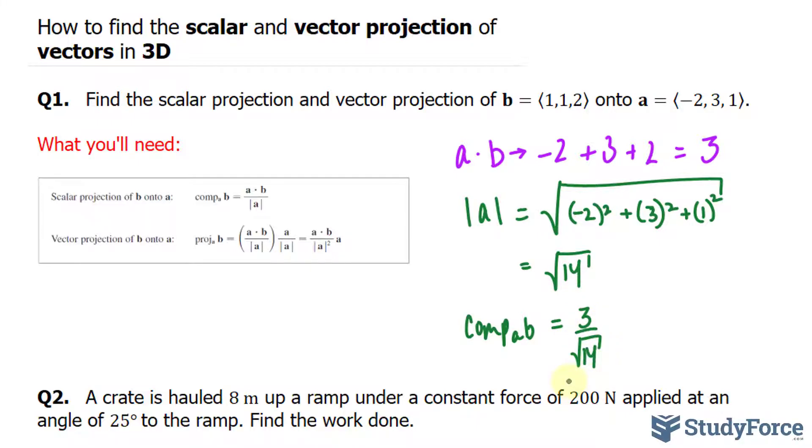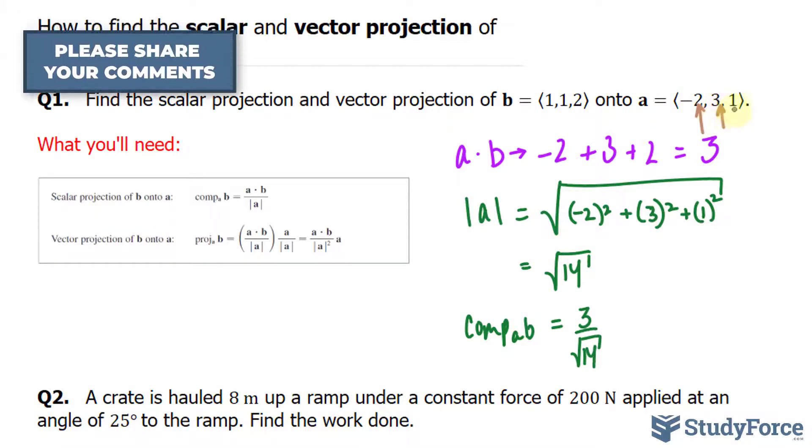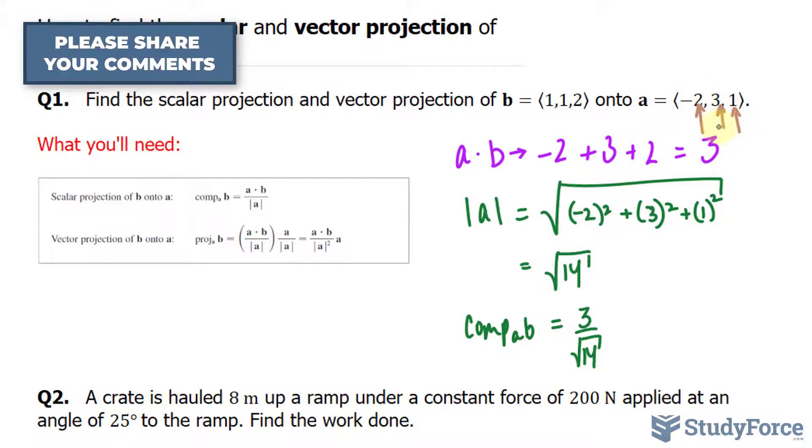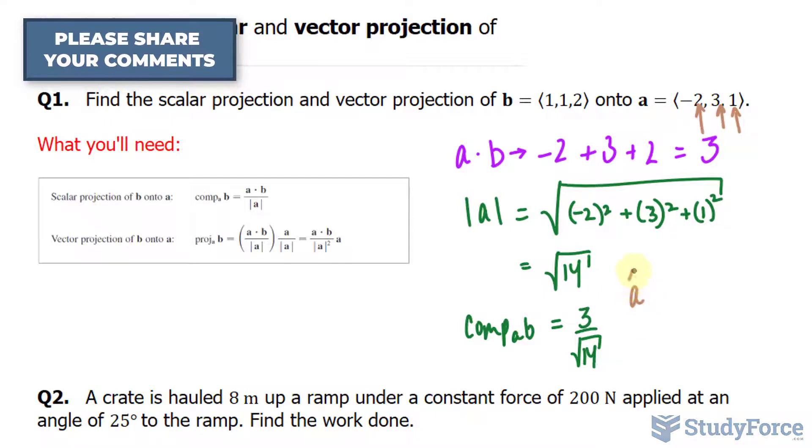Now as I mentioned before, to find the vector projection, that's actually a vector, you need to multiply this to the unit vector of A. So how do we find the unit vector? You take this number, and you divide it by each of these components. And we represent the unit vector of A using the symbol A hat.